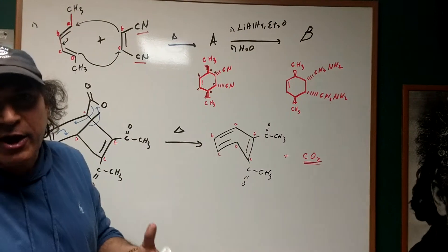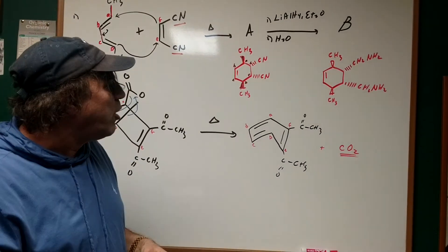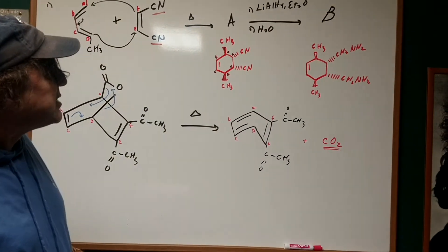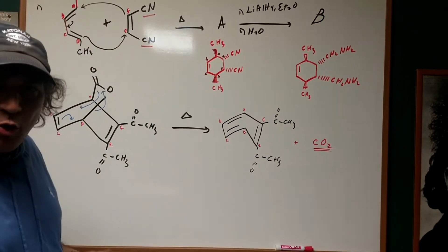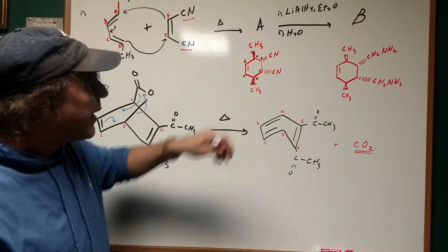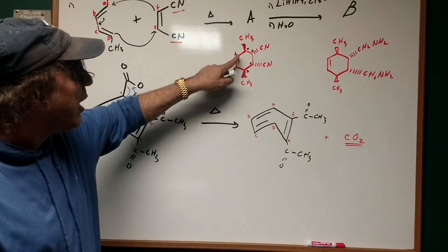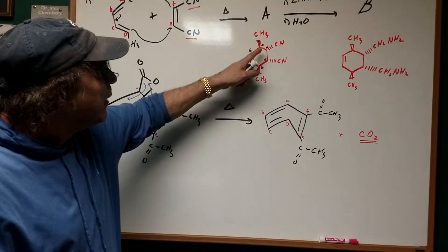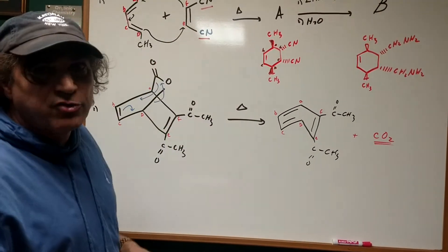I've got to show this proper stereochemistry here. If these are wedges, I'm going to make these dashes in the same direction just so they're not going to be sterically hindered each other. Once I get this, this is my Diels-Alder adduct or product. When I built the six-membered ring, four carbons came from the conjugated diene and the other two carbons from the dienophile.